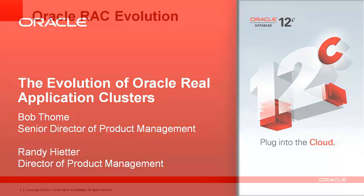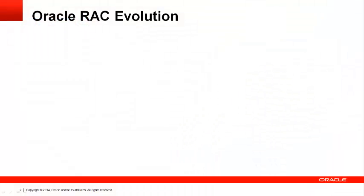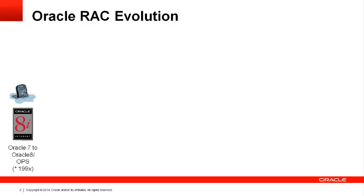Oracle announced Oracle RAC in 2001, so the product is now 13 years old and quite mature. But the evolution of RAC started long before 2001. It started in Oracle 7 with a product called Oracle Parallel Server, or OPS. OPS was Oracle's first parallel database — a database that could span multiple servers in a cluster with all servers working together to satisfy requests. OPS brought great advantages over single instance databases.